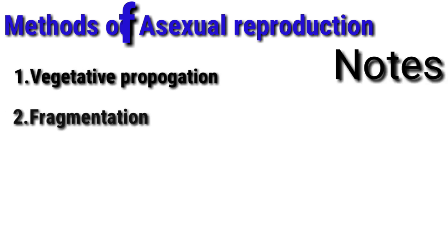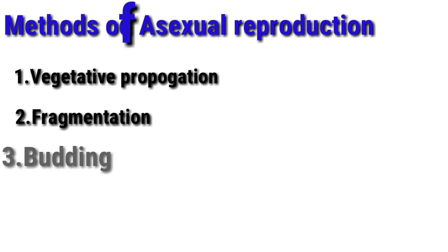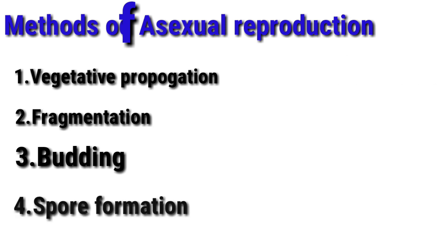In asexual reproduction, there are four methods of reproduction. If you are asked what the methods of asexual reproduction are, note these four: first, vegetative propagation; second, fragmentation; third, budding; and fourth, spore formation.